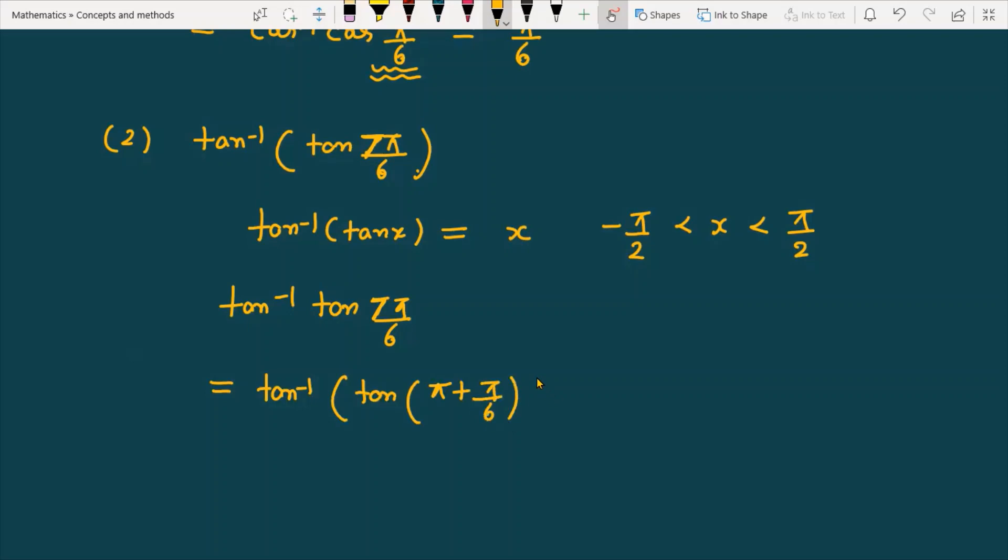In trigonometry you have studied that tan(180° + θ) equals tan θ. So you can directly replace this with tan inverse tan π by 6.